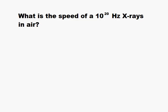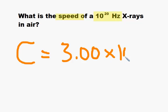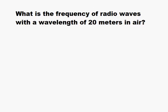Let's use this equation to solve some problems. First: what is the speed of 10²⁰ Hz x-ray waves in air? This is what some students might call a trick question — the speed of light and therefore the speed of all electromagnetic waves is constant in a vacuum: 3.00 × 10⁸ meters per second. That's one of the fundamental constants of the universe, so the answer is simply 3.00 × 10⁸ m/s.